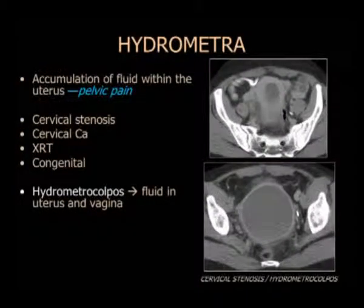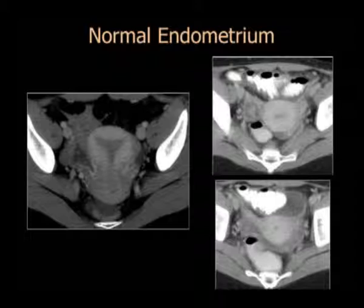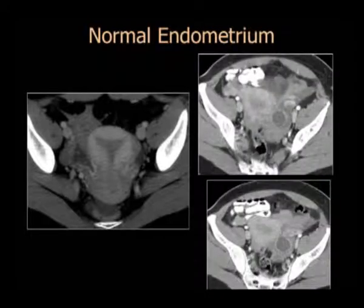Otras características que pueden explicar el dolor pelviano son la hidrometra: pacientes con problemas benignos, estenosis cervical por irradiación o DIC previa. Pero puede haber casos de carcinoma cervical o vaginal que explican la hidrometra con fluido en el endometrio o canal endocervical. Tengan en mente que el endometrio normalmente es un prolijo triángulo. En la TAC verán una baja atenuación triangular dentro del útero. Esta imagen triangular es normal; puede cambiar en la fase secretoria, pero sigue siendo un triángulo.